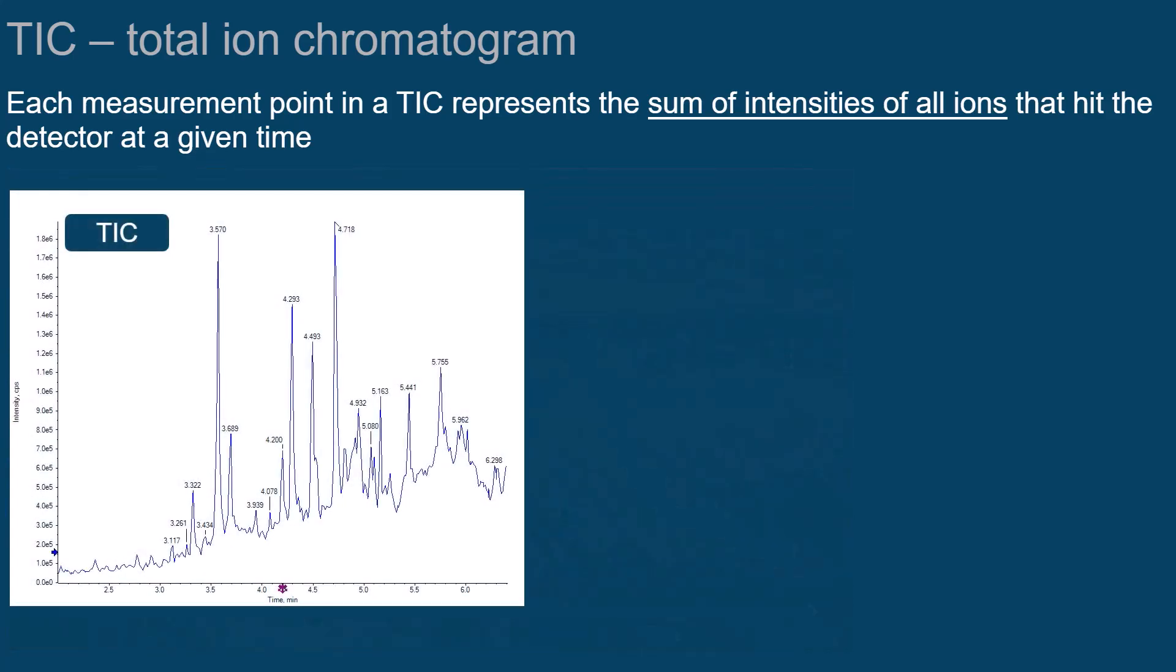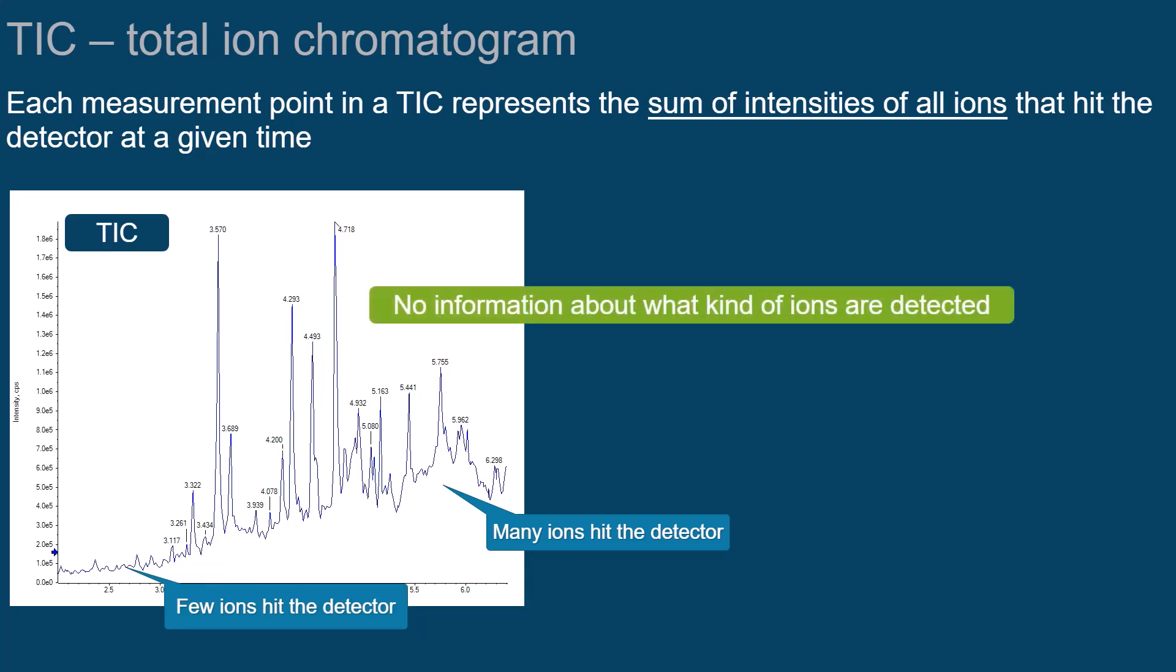In a TIC, you can see at what time point the detector recorded more ions, and when it detected fewer ions. But you do not get any information about what kind of ions they are.